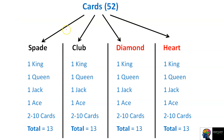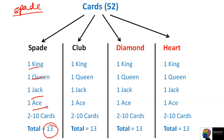Find the probability that the card drawn is of Spade. How many total cards are of Spade? There are 13 — king, queen, jack, ace, and 2 through 10. Total is 13. So what are we going to do? 13 by 52. We don't know specifically if it is king, queen, jack, or ace — it just needs to be spade. So the probability is 13 by 52.